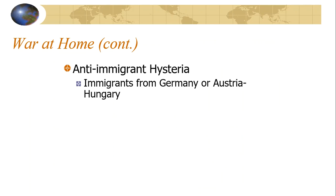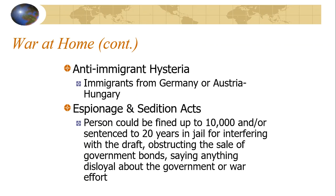There was an anti-immigrant hysteria, with immigrants from Germany and Austria-Hungary facing a lot of criticism. The Espionage and Sedition Acts were passed — people could be fined up to $10,000 and/or sentenced to 20 years in jail for interfering with the draft, obstruction of the sale of government bonds, or saying anything disloyal about the government or the war effort. This is very similar to the Alien and Sedition Acts of John Adams' presidency. In times of war, civil liberties can be restricted if it's deemed necessary for national security — just as Abraham Lincoln was able to suspend due process during the Civil War.